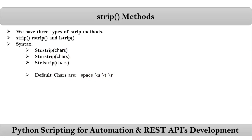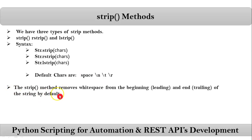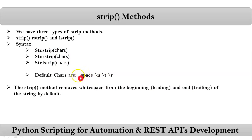Now, what is the usage of these strip methods? The strip method removes whitespace — meaning all four of those default characters — from the beginning and end of the string by default. If you don't pass any char, Python will remove those four characters if they are present at the beginning or at the end of the given string. If you want to remove any custom characters, you need to pass them explicitly.